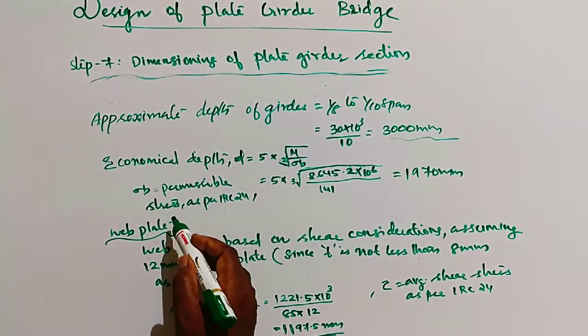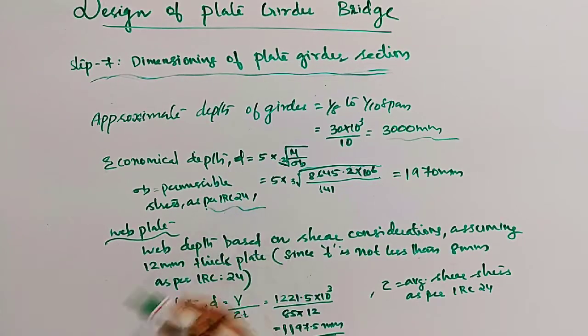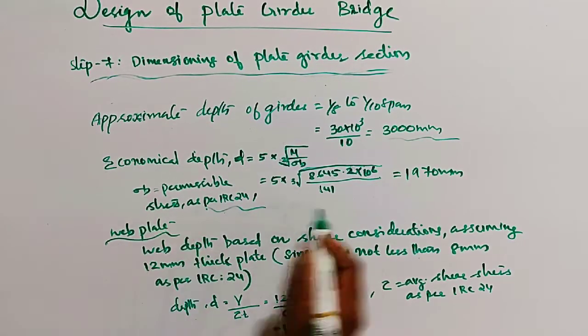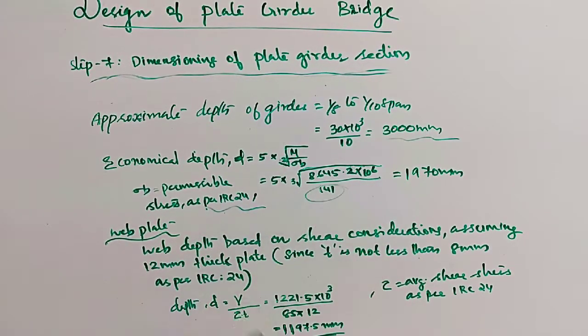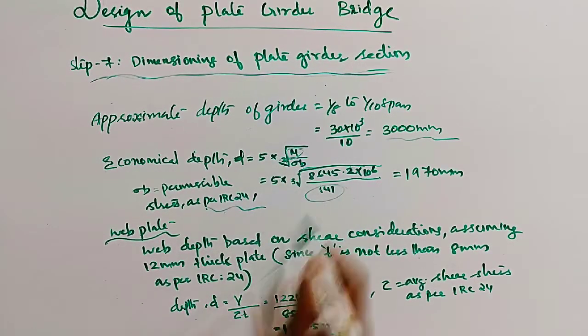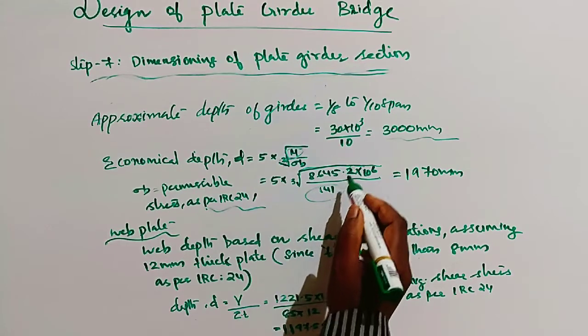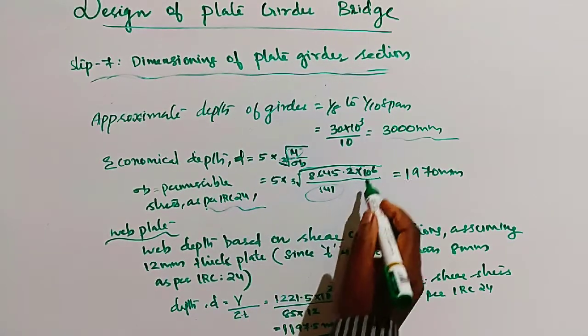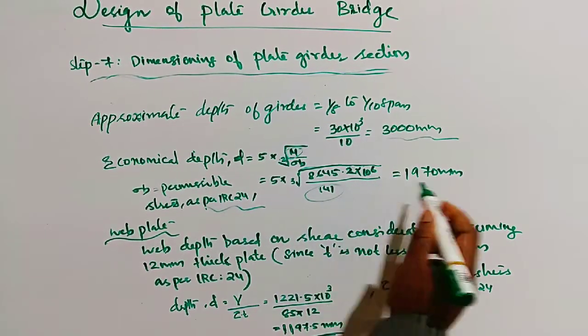Where sigma b is the permissible stress. As per IRC 24, sigma b equals 141. Then substitute all these values. M is the design bending moment, which is 8645.2 kilonewton-meters. Converting to newton-meters, multiply by 10 to the power 6.